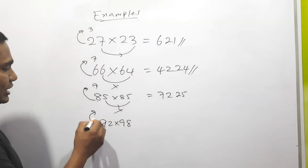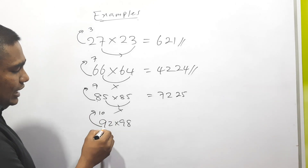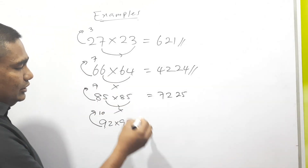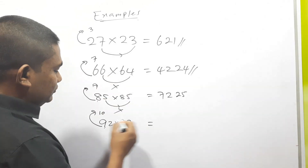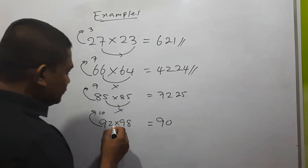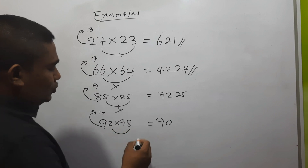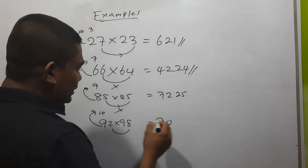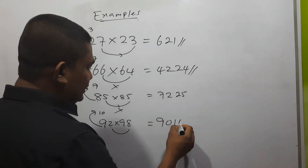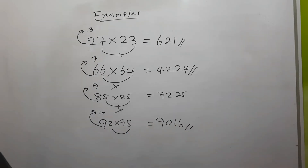For 92 into 98 — add one to the 10th place number: 9 plus 1 is 10. 9 into 10 is 90. Then multiply these two unit digits: 2 into 8 is 16. The answer is 9016.